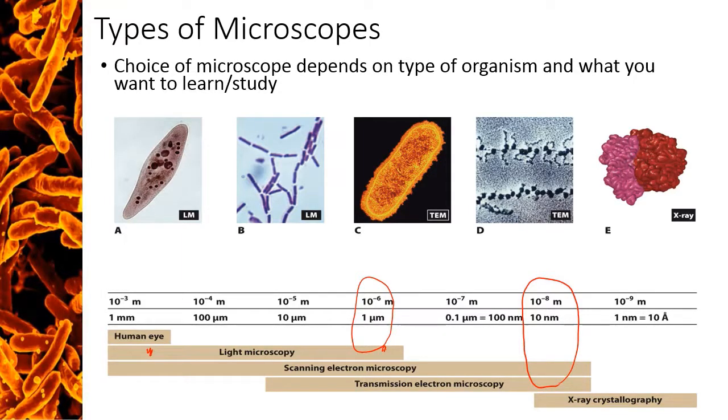One nice feature of your microbiology in the human experience textbook is that all the microscopy images are labeled in the corner that indicate what type of microscope was used to take the image. Notice these labels as you read because it will help you better understand the types of microscopy that the images were generated with.